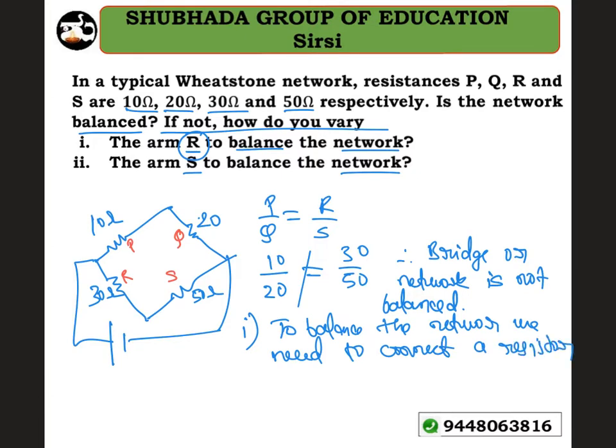We need to connect a resistor in parallel with R. So we connect another resistor in parallel so that the bridge will be balanced again.